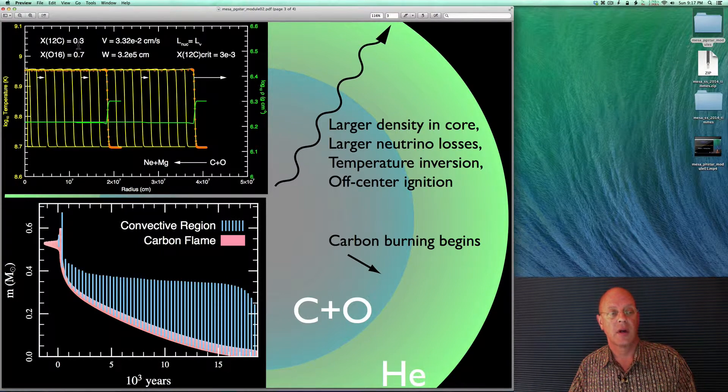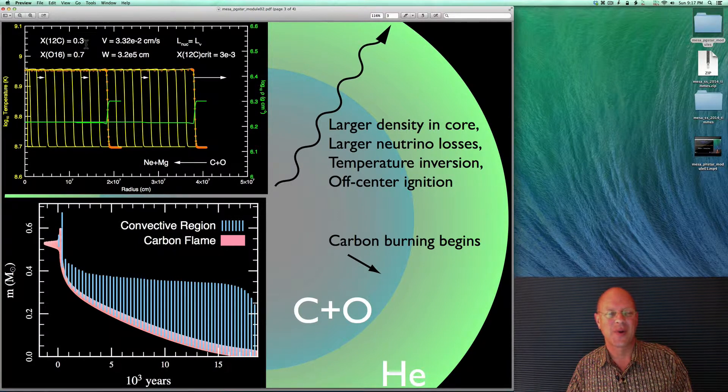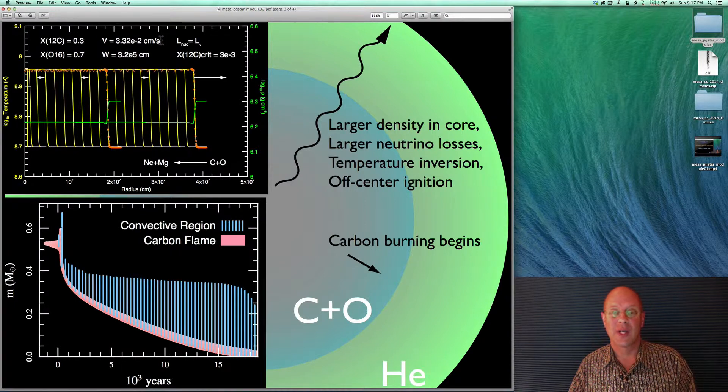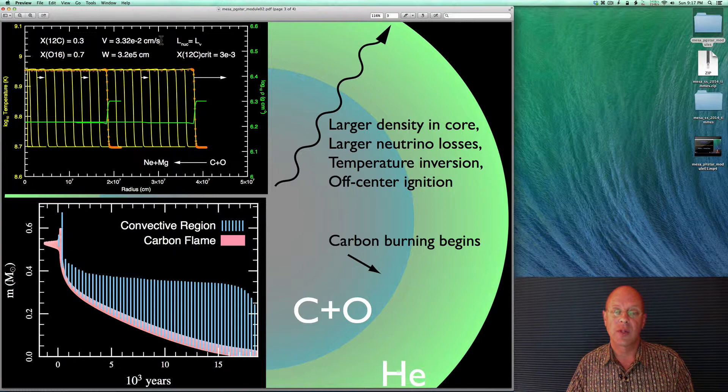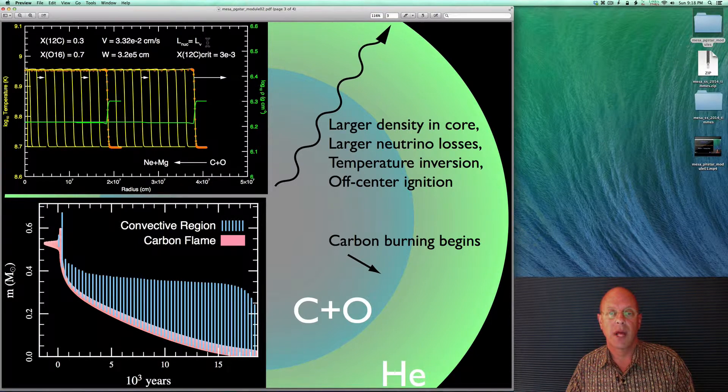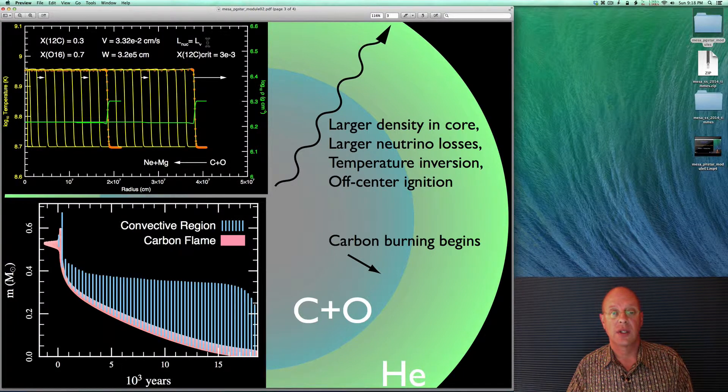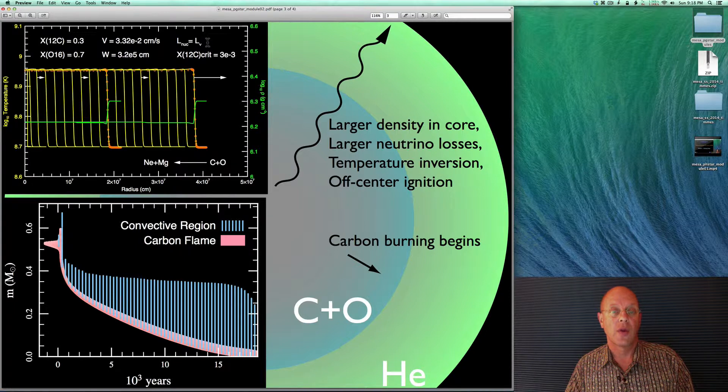This particular set of calculations is for a composition of carbon 12C to oxygen 16O of 0.3 to 0.7. You can see that the flames are quite slow, on the order of a few hundredths of a centimeter per second. They're fairly flat, fairly wide, 3.25 centimeters. And these flames operate in what's called balanced power, where the energy deposited by nuclear reactions is balanced at the flame front by the thermal neutrino losses.